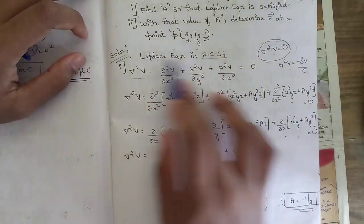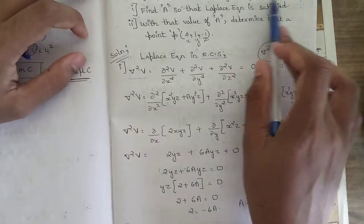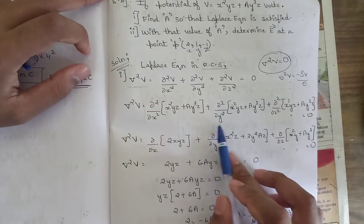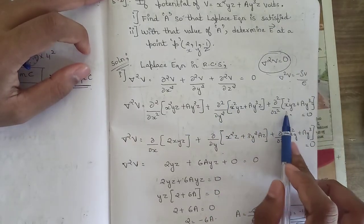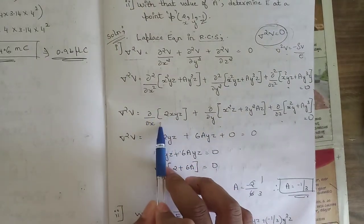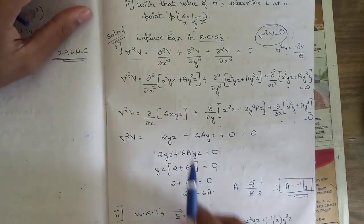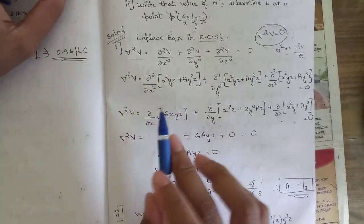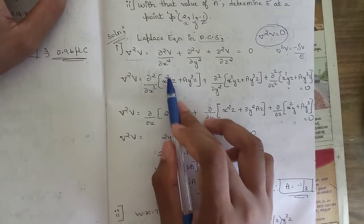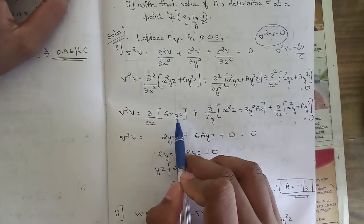In rectangular coordinate system, compute ∂²/∂x² of V = x²yz + ay³z. Similarly compute ∂²/∂y² and ∂²/∂z² of V, then equate the sum to 0. Differentiating once with respect to x: from x²yz we get 2xyz, and the ay³z term has no x, so it gives 0. After first differentiation we have 2xyz.